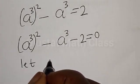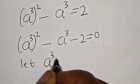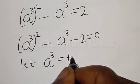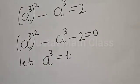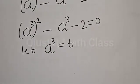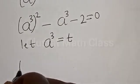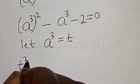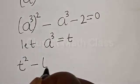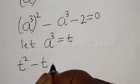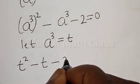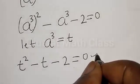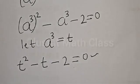Let A raised to power 3 be equal to T. Then we have T squared minus T minus 2 is equal to 0. This is a quadratic equation.